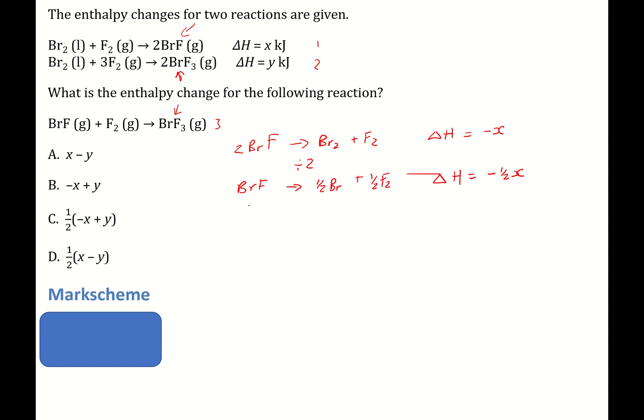So immediately I'm going to half everything. So half Br₂, so that's Br₂ that we're halving, plus 1 and a half fluorine will go to BrF₃. Now that looks more like what we want.